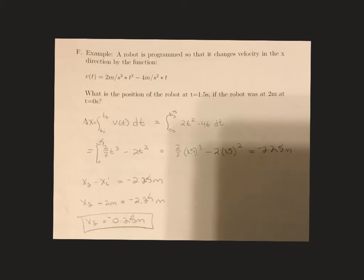So plugging in the initial position, we find that the position of the robot is negative 0.25 meters. So let me sort of draw that concept because the fact that we got a negative number is a little confusing. So the robot starts out at 2 meters from some 0 point, and so the robot goes backwards 2.25 meters. So we're really looking at this minus this, and this is where, if this is our 0 point here, this is how we get a position of negative 0.25 meters.